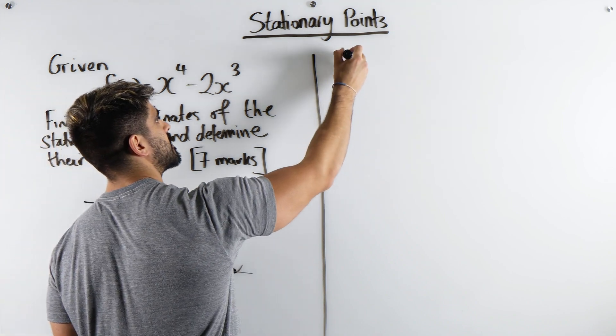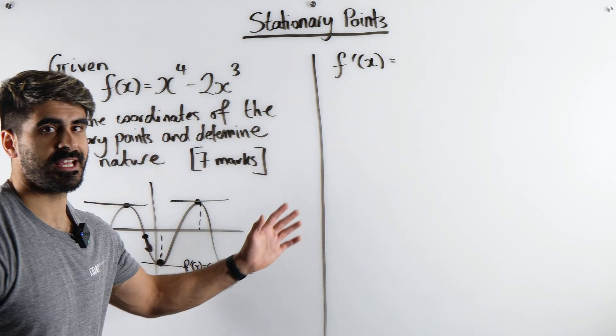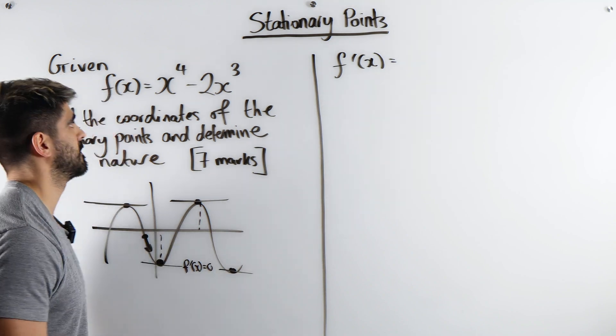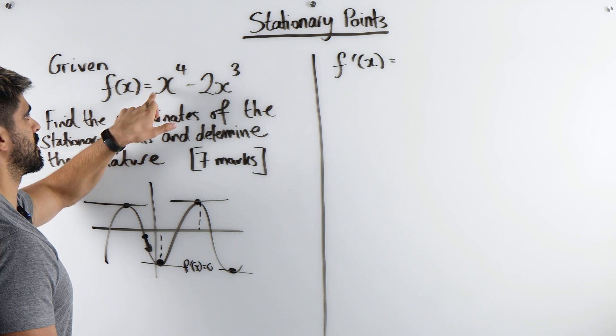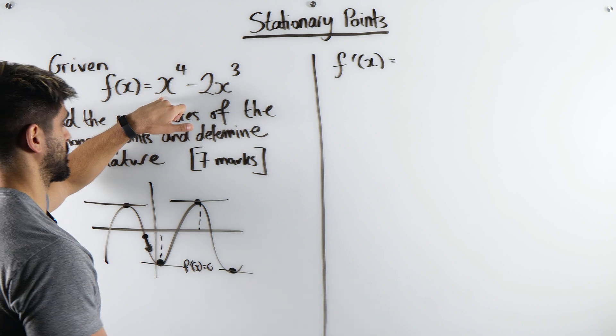Differentiating this, very simple. Lucky for you guys, differentiation in GCSE further maths and year 12 is super easy. It gets a bit mad in year 13. So we differentiate this, we bring down the power, knock one off the power because it's a power function.